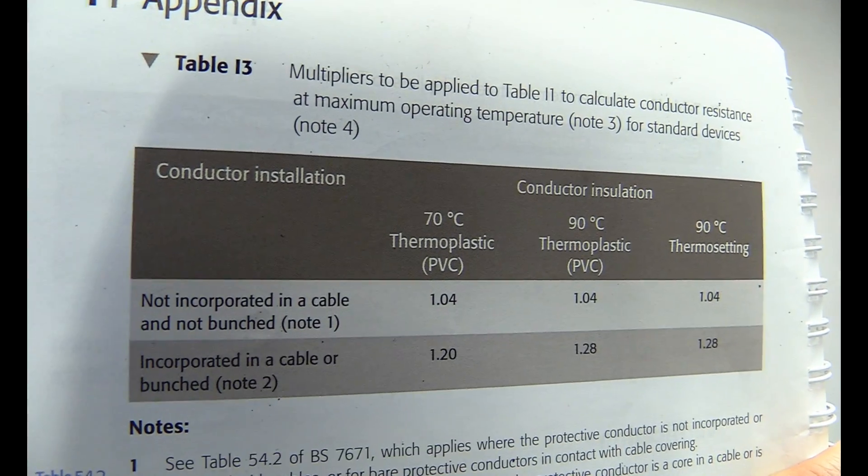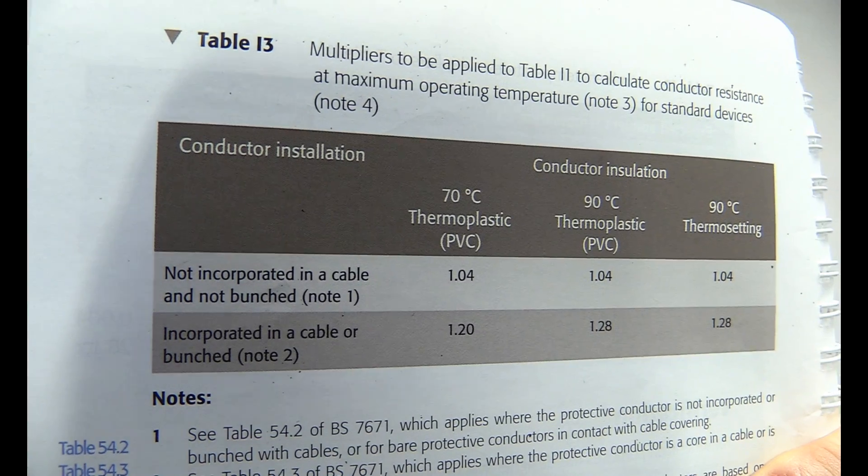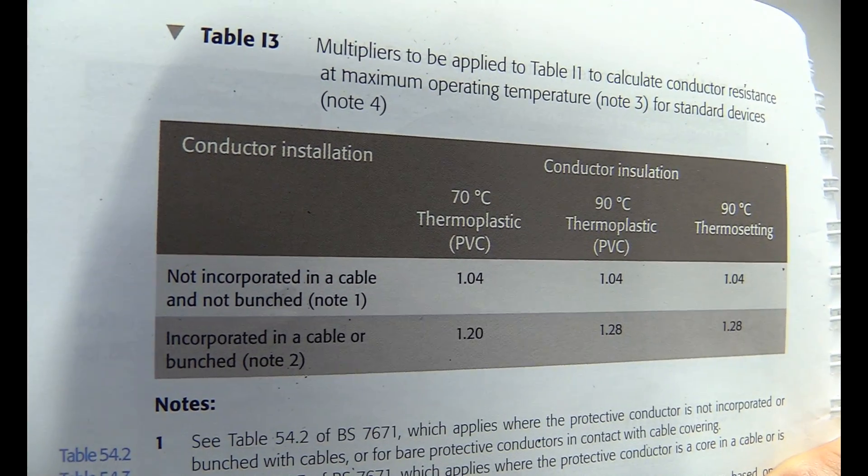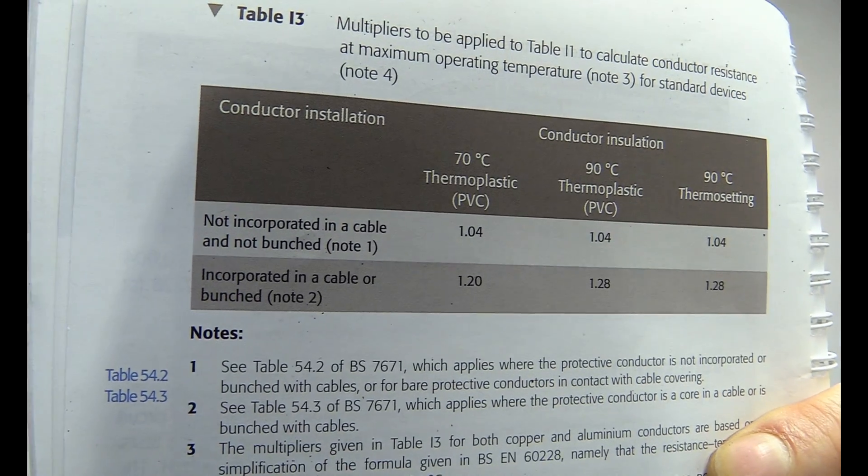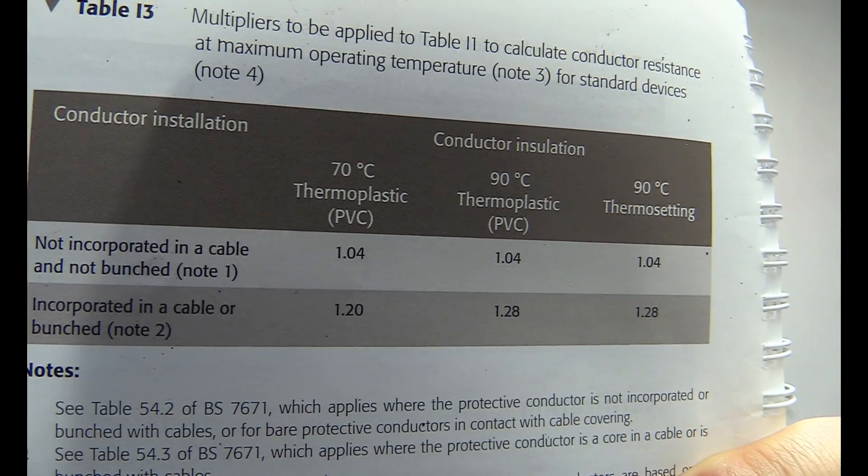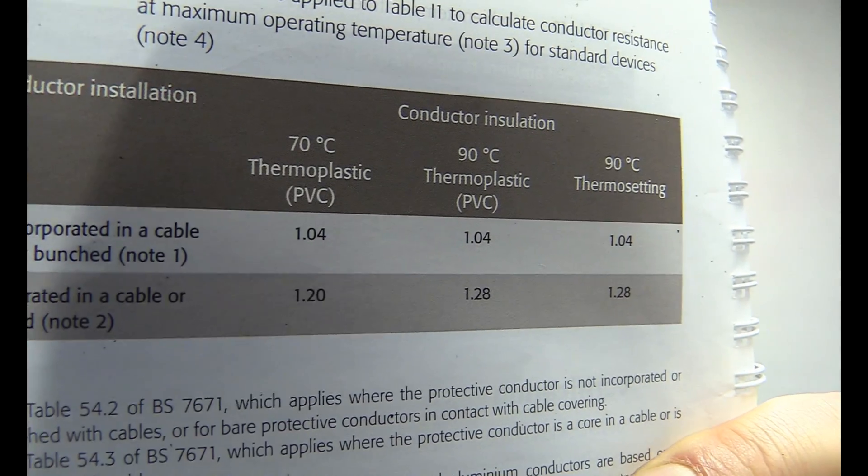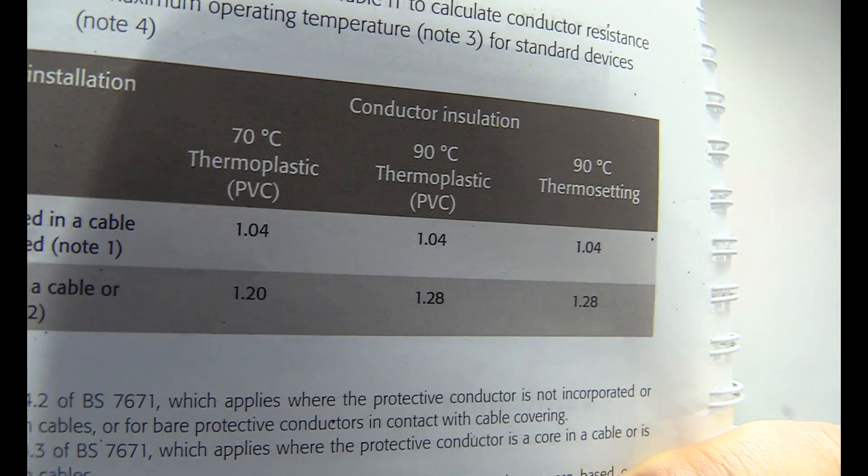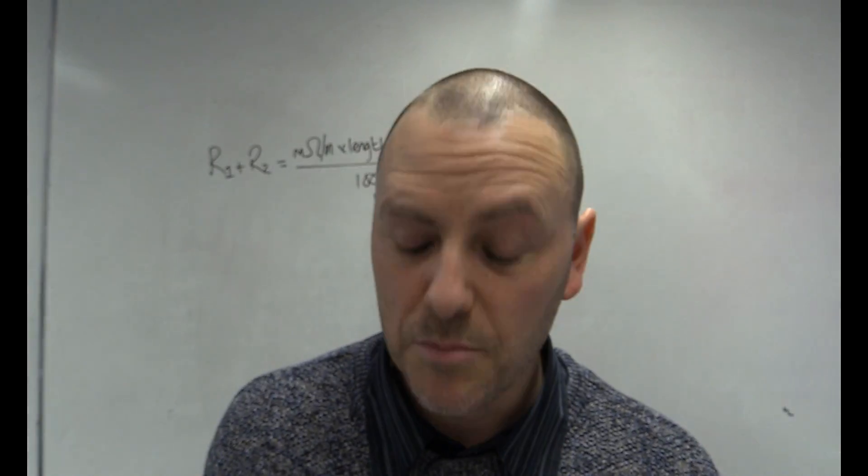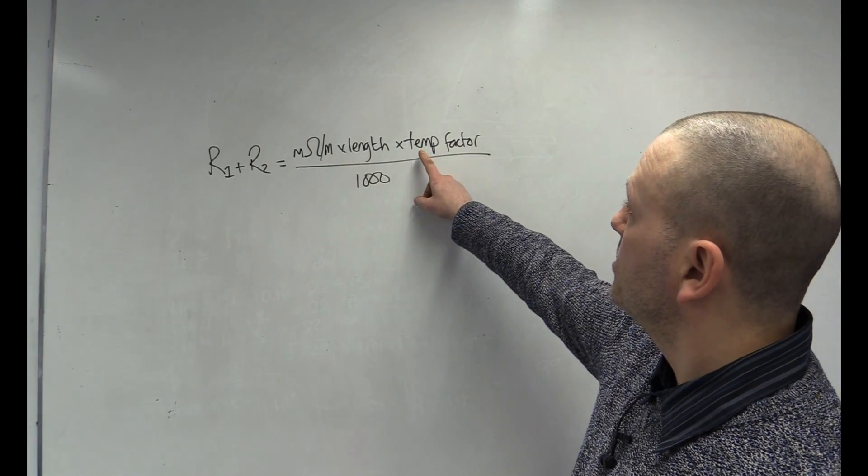You can see, for our 70 degree thermoplastic cable incorporated in the cable, or bunched, so twin and earth, or flex, or whatever, we've got a factor of 1.2, and for a 90 degree cable, same conditions, we've got 1.28, and thermosetting insulation is also 1.28, because the important thing is the temperature.